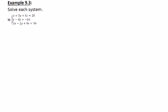Example 9.3b wants us to again solve the system. Here we have three equations. There are three different types of variables here: x, y, and z.